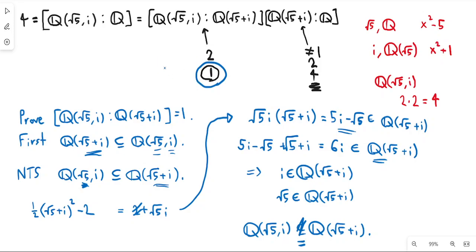So what I was doing earlier where I found a polynomial that square root of 5 plus i was a root of — I didn't know if it was the minimal polynomial. But what this shows is that whatever the minimal polynomial is, it has to have degree 4, because we just showed the extension degree is 4. So that actually confirms that the polynomial from earlier is the minimal polynomial, although you have to multiply by something to make it monic first. That is basically it for this video — thank you very much for watching.